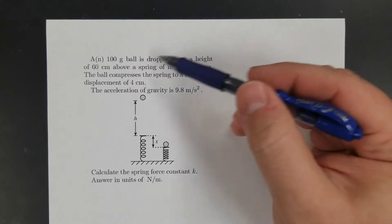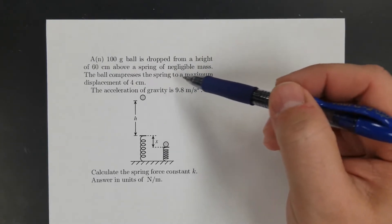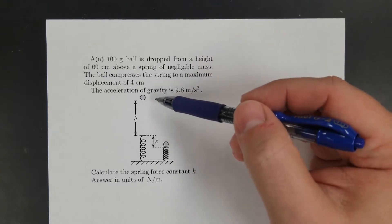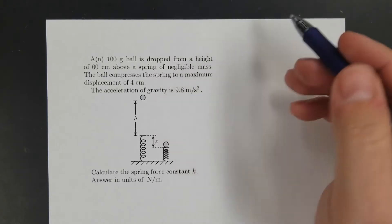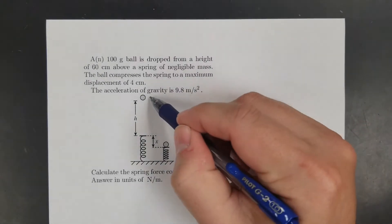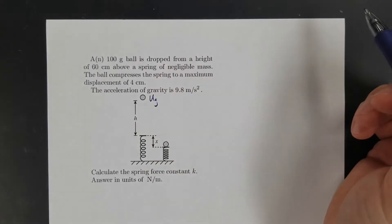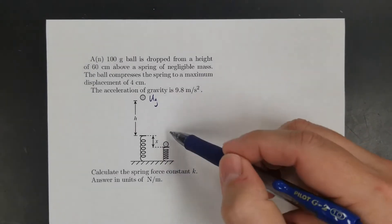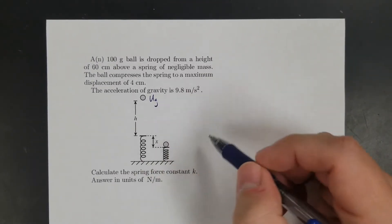This first one: a 100 gram ball is dropped from a height of 60 centimeters. It compresses the spring to a maximum displacement of 4 centimeters. We start by thinking energy at the beginning, energy at the end. At the beginning, this thing is starting with gravitational potential, and then at the end when it squishes that spring, all the gravitational potential is gone.